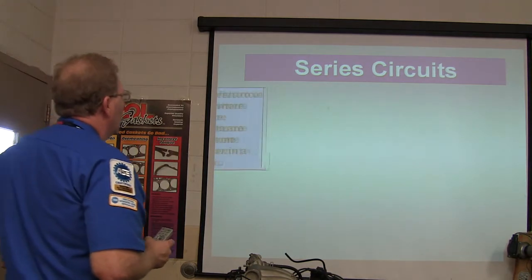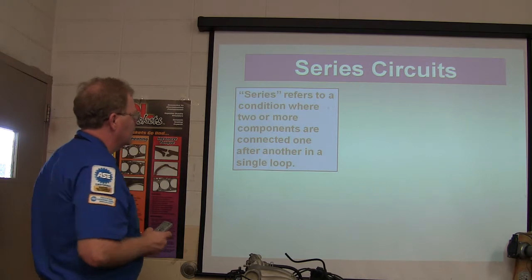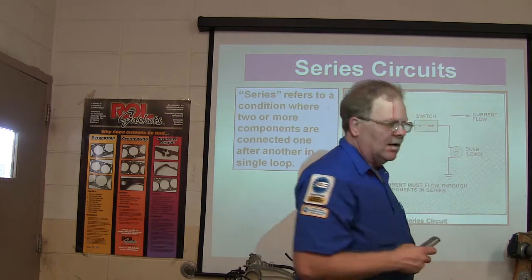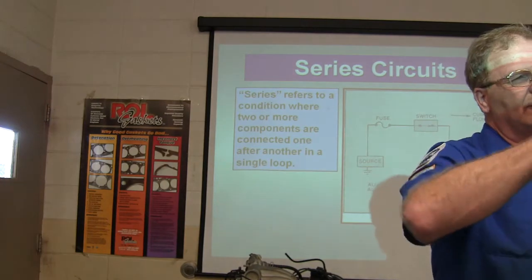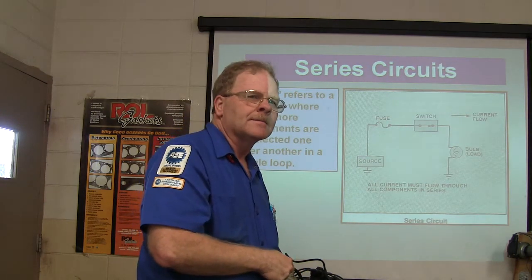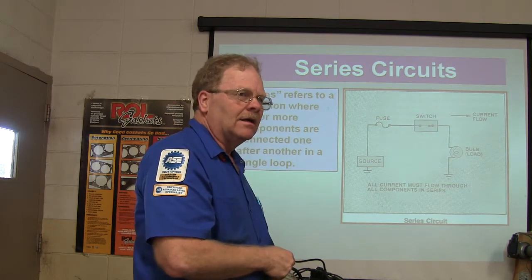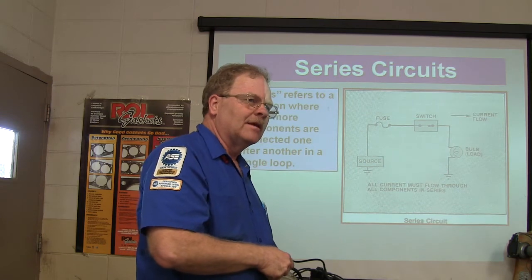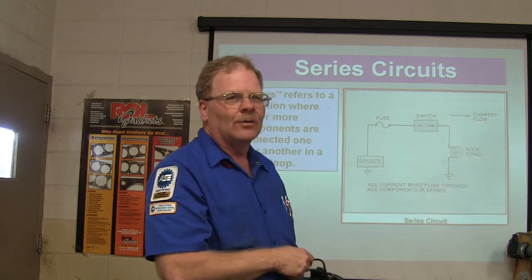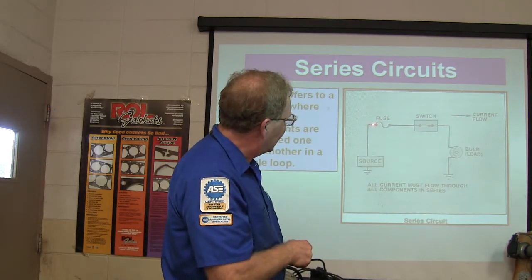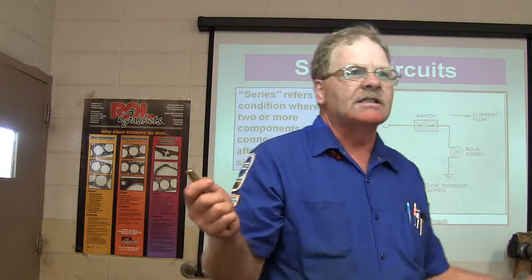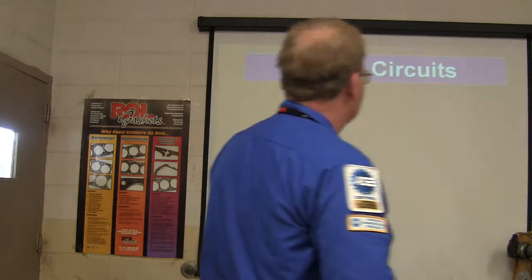A series circuit refers to a condition where two or more components are connected one after another in a single loop — you've got a source, a fuse, a switch, and a bulb. The switch and fuse are actually part of a series circuit. Does the fuse use any power? It doesn't — it just flows through it. If you have a switch with dirty contacts, you'll lose some power there — we call that voltage drop. If a fuse is blown, you'll lose power totally. If you measure across a blown fuse with your meter, you'll read 12 volts — full system voltage dropped across the fuse.